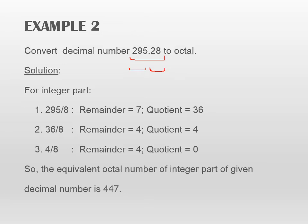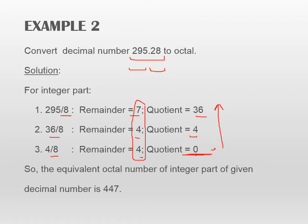The integer part will be converted to octal by dividing it by 8. 295 divided by 8 gives remainder 7 and quotient 36. Then 36 divided by 8 gives remainder 4 and quotient 4. Then we get quotient 0, so this is our end point — we stop the division process. Writing the remainders from bottom to top, your decimal integer 295 has octal conversion 447.